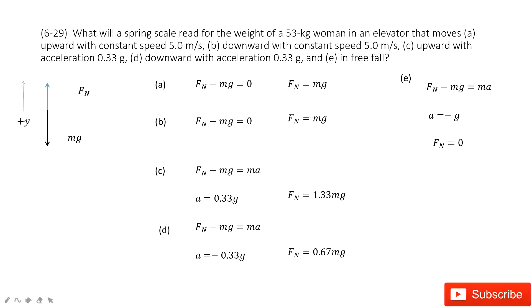So we take up as a positive direction. The first one tells us it moves at a constant speed. What I mean by constant speed? Acceleration is zero. So we write Newton's second law. The normal force minus the gravity must equal to zero. Acceleration is zero. So in this case, the normal force just equals gravity.